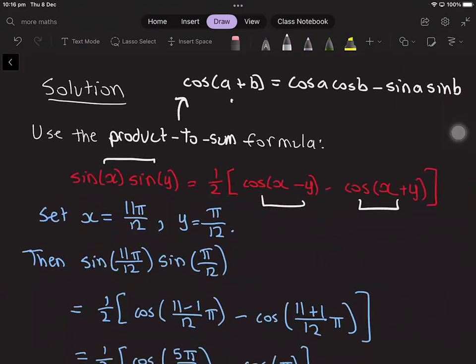So when we do that, the left hand side is sin 11π over 12 times sin π over 12. And the right hand side, so x minus y, we get 11 minus 1 over 12 times π. And the right hand side of the x plus y here is 11 plus 1 over 12 times π, and we also have the half at the front.